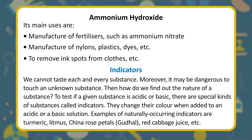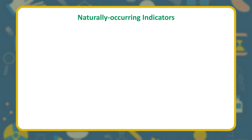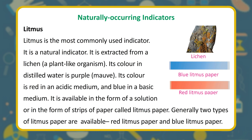Examples of naturally occurring indicators are turmeric, litmus, china rose petals, gurihal, red cabbage juice, etc.